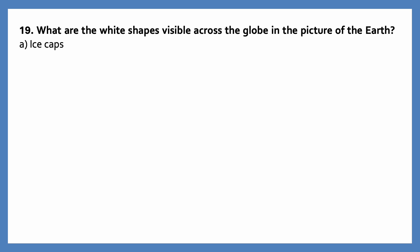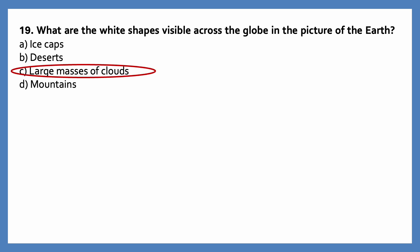What are the white shapes visible across the globe in the picture of the earth? Options are: ice caps, deserts, large masses of clouds, mountains. The correct answer is large masses of clouds.